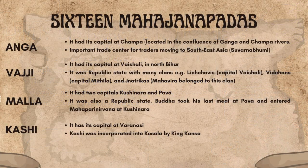Now let us look briefly at the 16 Mahajanapadas one by one. Anga had its capital at Champa, located at the confluence of the Ganga and Champa rivers. It was an important trade center for traders moving to Southeast Asia, known as Suvarna Bhoomi.